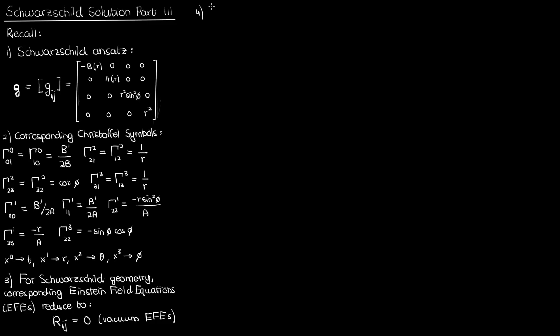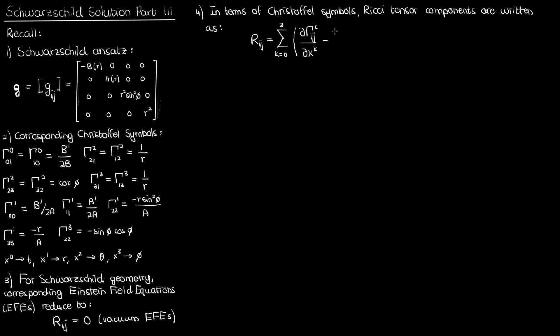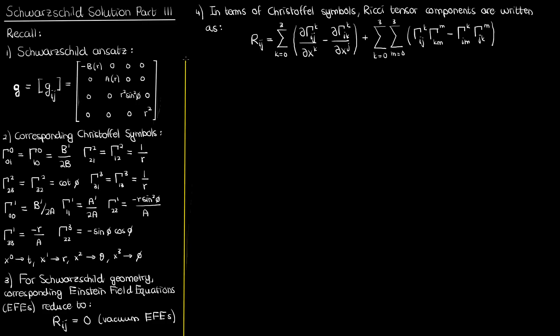The fourth thing to recall is that the Ricci tensor is basically a contraction of the rank-4 Riemann curvature tensor, whose components are calculated using the Christoffel symbols. In terms of those second-kind Christoffel symbols, the Ricci tensor components R_ij are written with the first two terms being the derivatives of the Christoffel symbols with respect to the coordinates, and the second two terms being the difference of the product of the Christoffel symbols. I've written this expression in terms of summations to make things more clear.